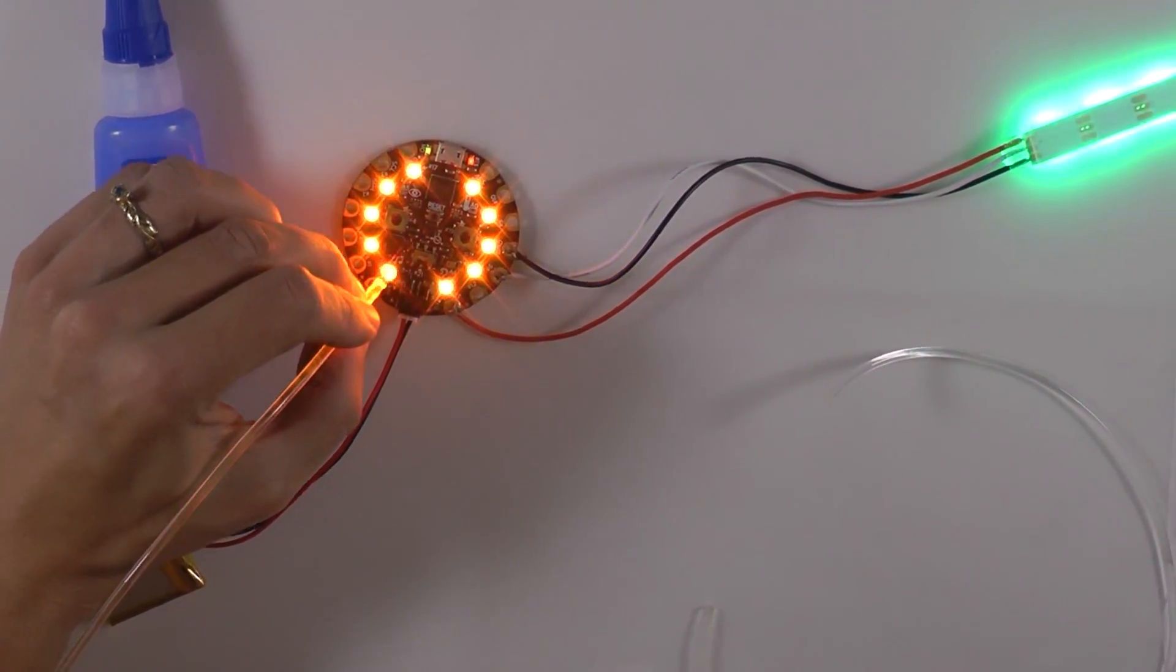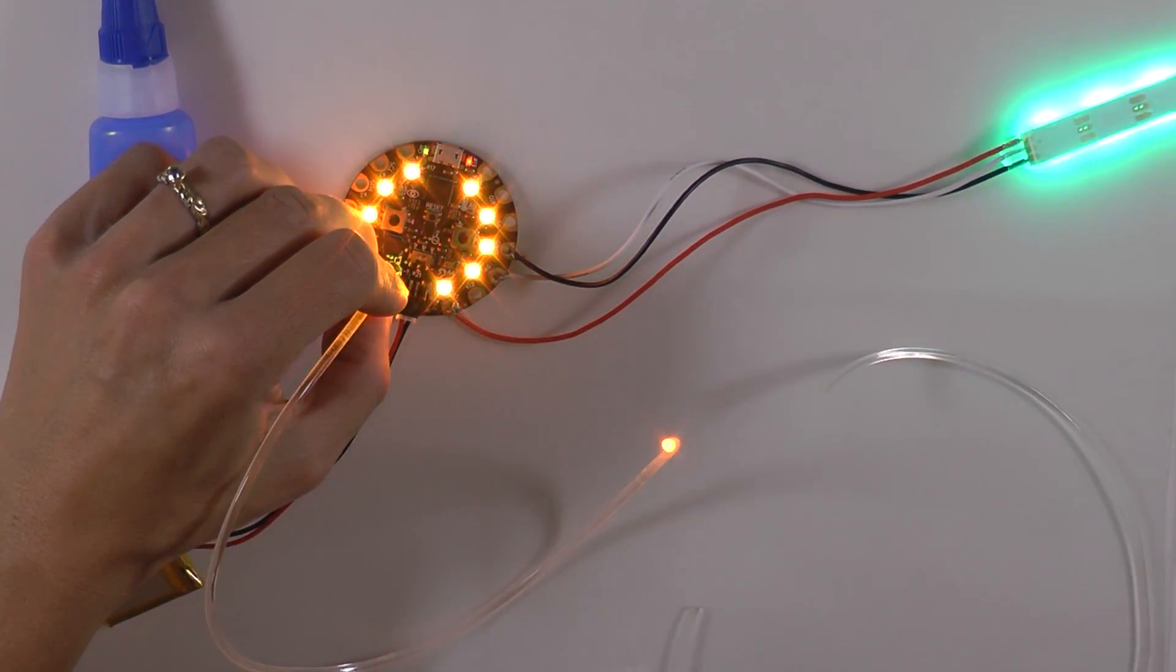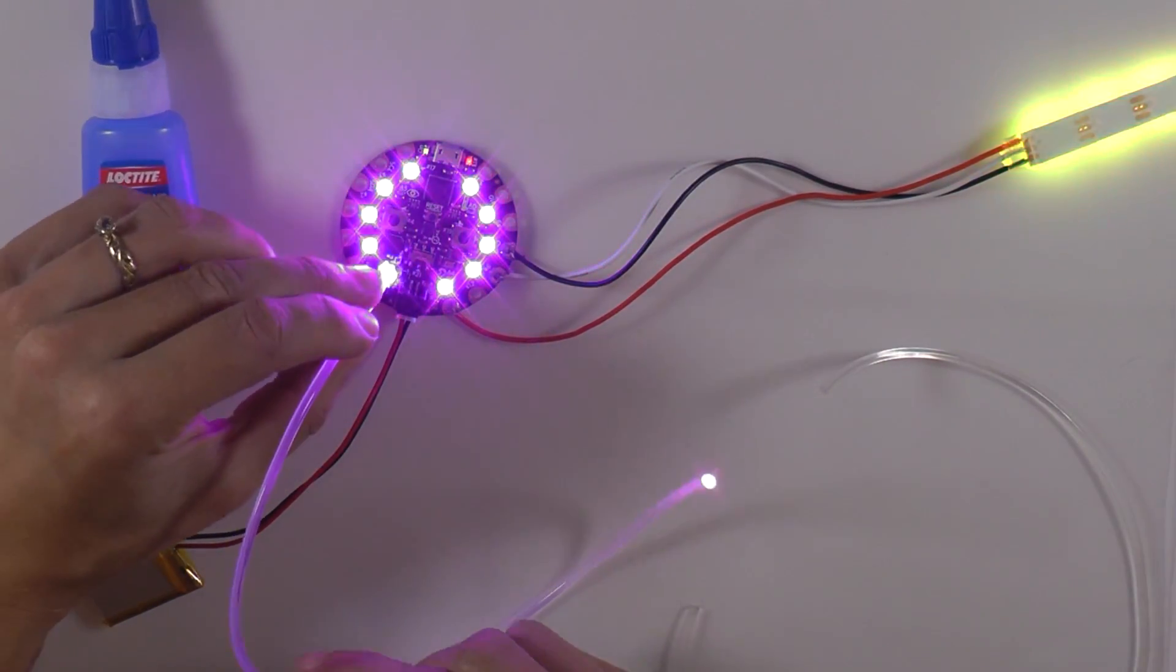Press the liquid light pipe down over one of the Neopixels on the circuit playground and hold it in place until the light pipe cools down and firms up.